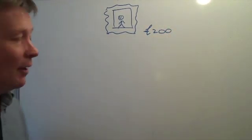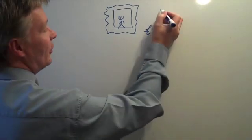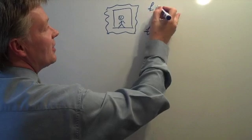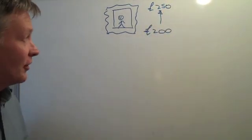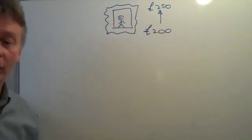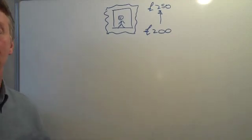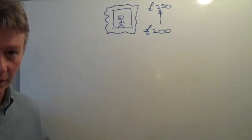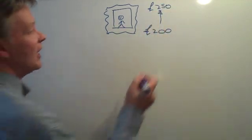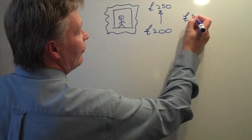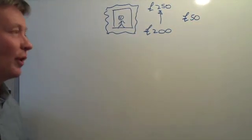Over the period of a year, that painting went up in value, and here we are 12 months later and the painting is now valued at £250. So the value of the painting has increased, and the examiner would want to know the percentage increase or percentage change. The actual change from £200 to £250 is £50, so my painting has increased in value by £50.